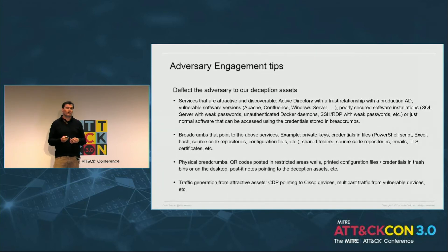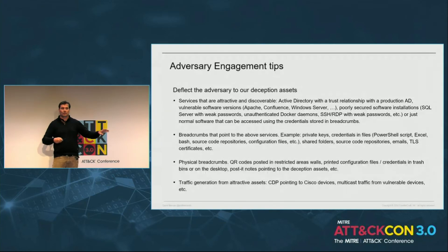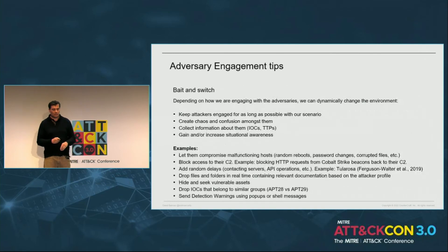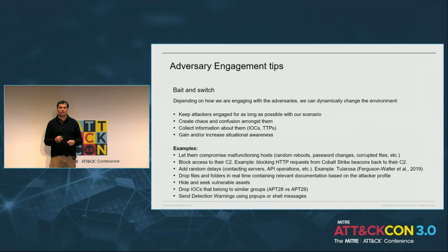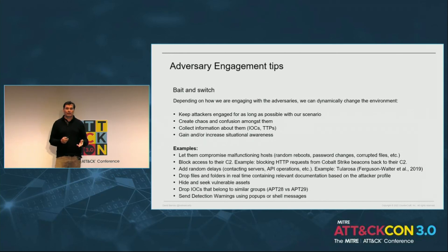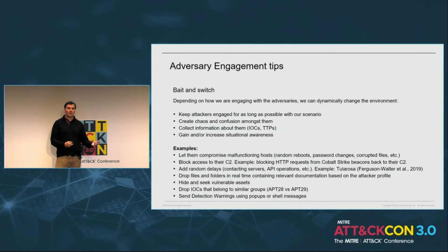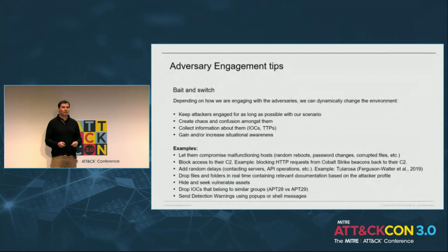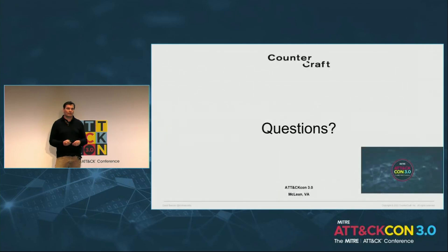Finally, some engagement tips — things we've been playing with using Engage recently. We can deploy different types of services and systems to attract attackers: vulnerable systems, non-vulnerable systems, credentials on a page pointing to a web server, SSH, or RDP. We can also play with attackers by doing a kind of bait-and-switch: imposing costs, creating confusion, delaying their actions, or forcing them to make mistakes so we can collect more information. For instance, imagine we detected APT28 in our networks. We can deploy APT29 IOCs and TTPs in the same network so that APT28 sees APT29 is also there, creating a lot of confusion and chaos back in their office. Many ways to impose costs on attackers.